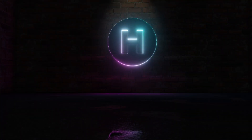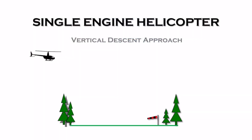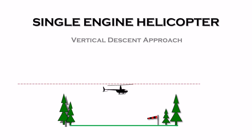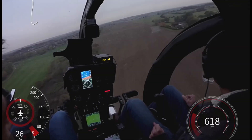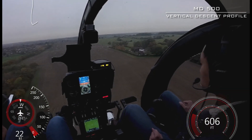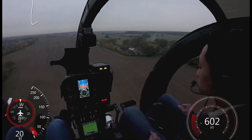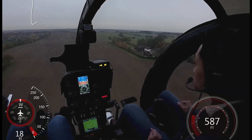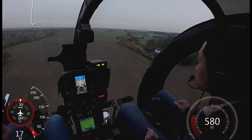The final approach method we'll look at is the vertical descent. This approach is used when there are obstacles both ahead and behind the landing area. Before going into the confined area you should consider the five S's and the two W's. First, size — is it large enough? Secondly, shape — what direction gives you the longest landing run? Thirdly, what are the surrounds of the landing area? What's the best direction for approach and what would you do in the event of an engine failure?